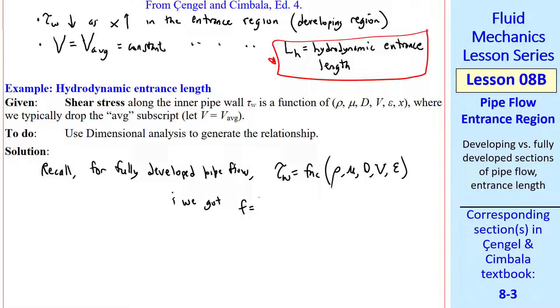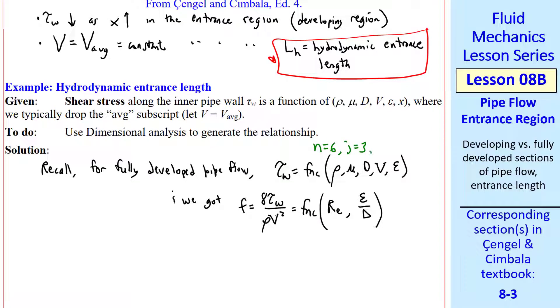And dimensional analysis yielded the dependent pi was f, the Darcy friction factor, is a function of Reynolds number and relative roughness epsilon over d. In this case we had n equals 6, the number of variables, j equals 3, the number of repeating variables, therefore k equals 3 pi's.